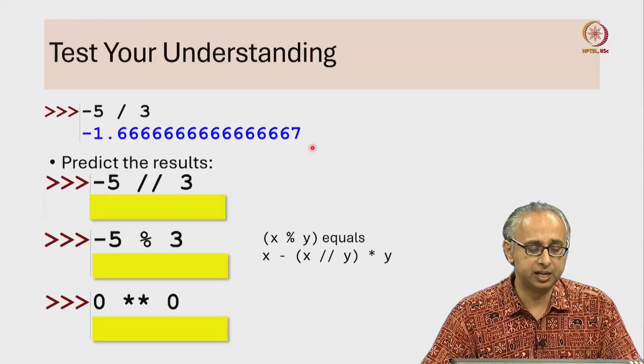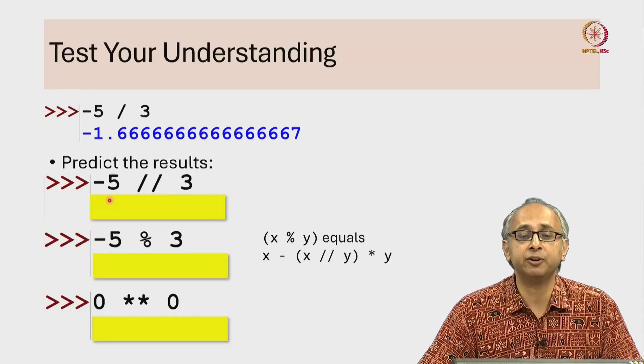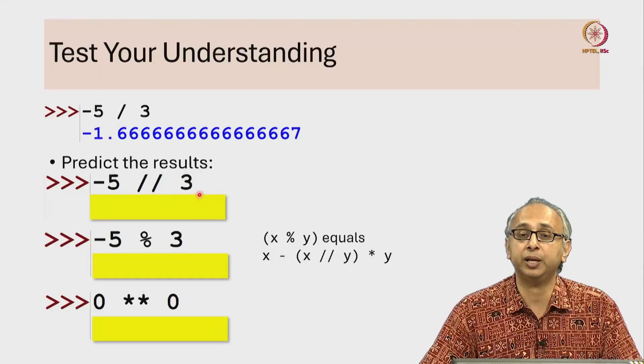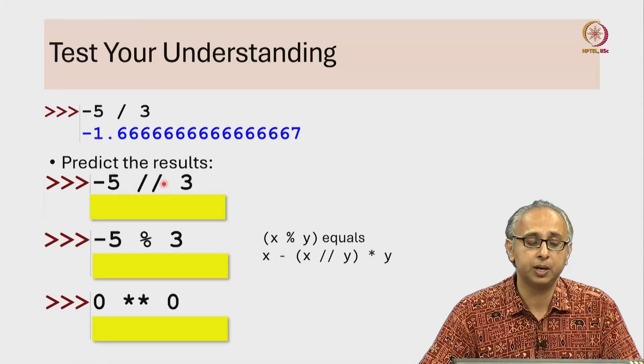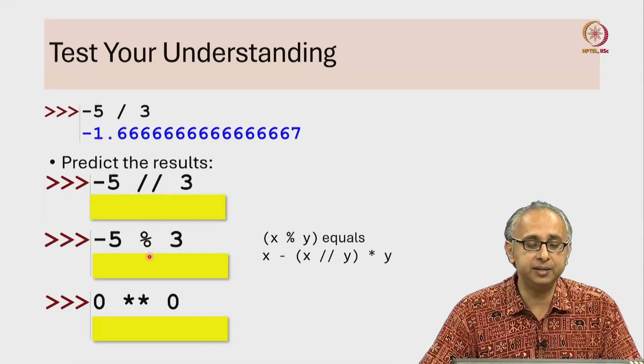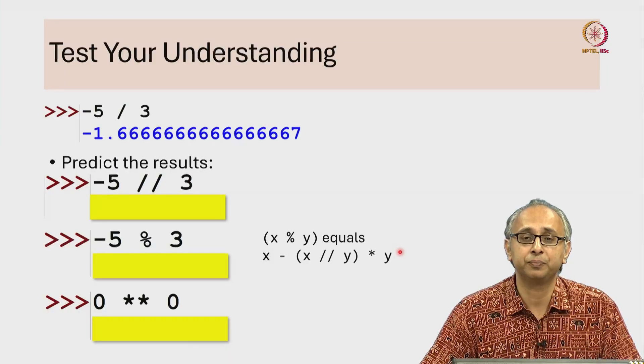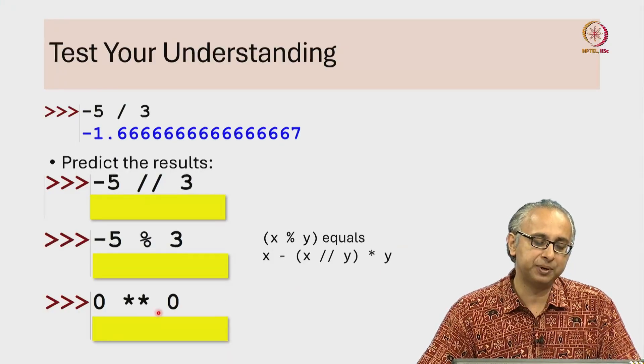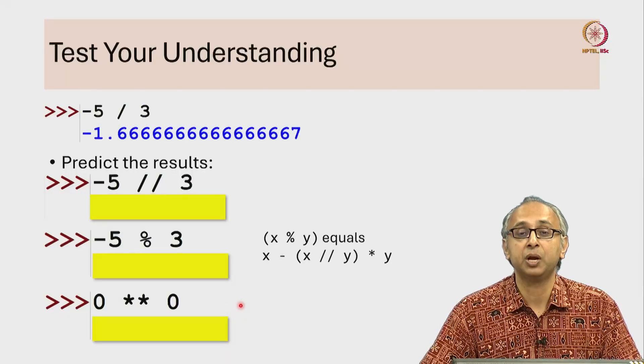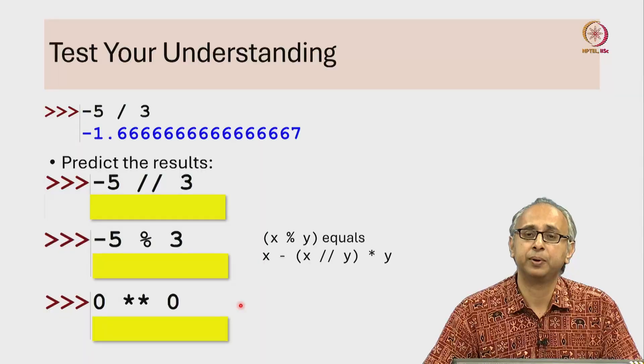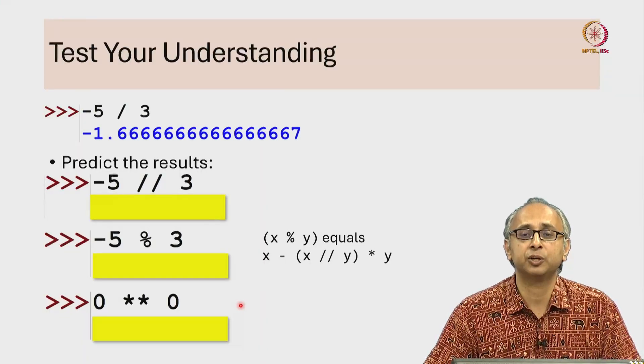Now let's take this as a fact and I want you to predict the results of these three operations. What would happen if we do minus 5 floor division 3? Please note the difference between true division and floor division. What would happen if we do minus 5 remainder 3 keeping in mind this technical definition. And lastly what would happen if you do 0 raised to the power 0? What I would suggest is open up the Python REPL and try and see if you can try these yourself.